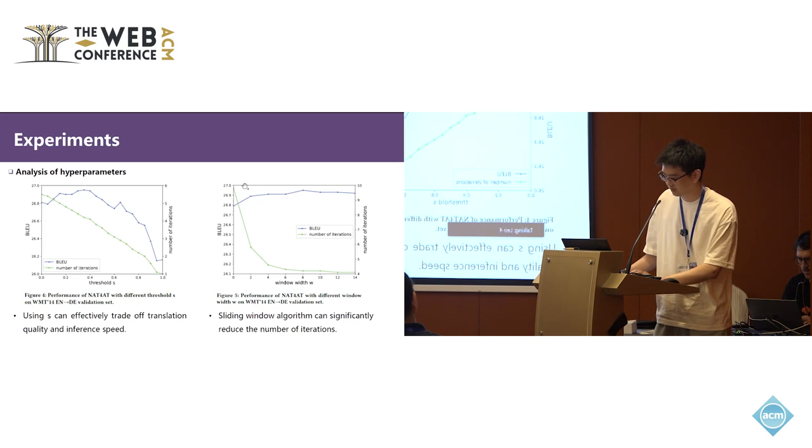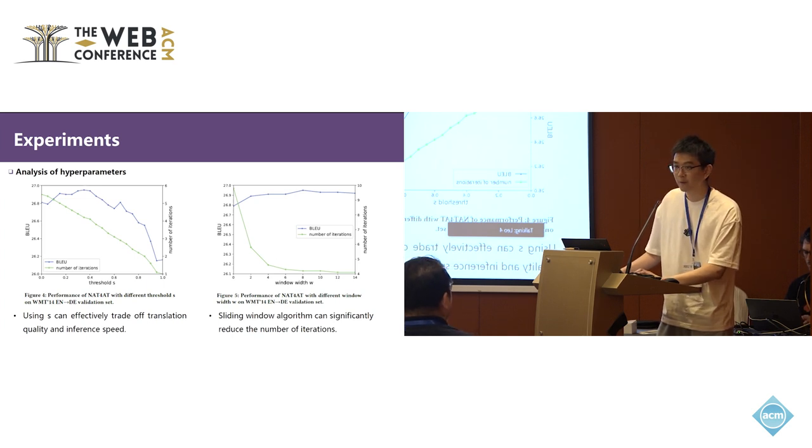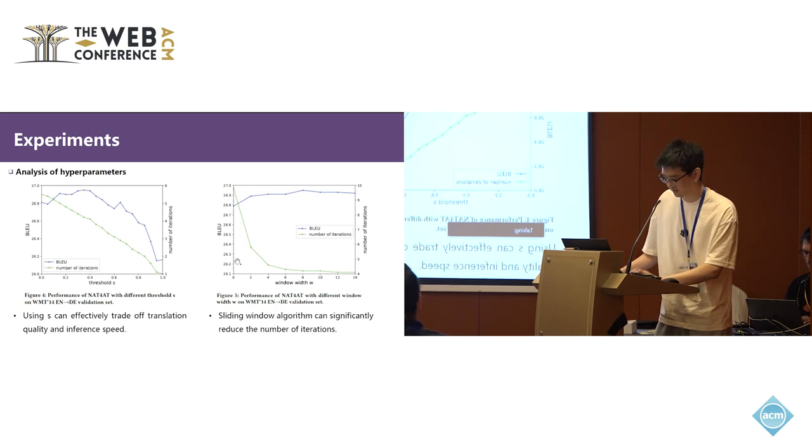As we can see, when W equals zero, our method requires the AT and NAT translations be strictly aligned, so an average of 9.8 iterations are required during inference. However, when W equals two, our method allows misalignment between AT and NAT and significantly reduces the number of iterations.